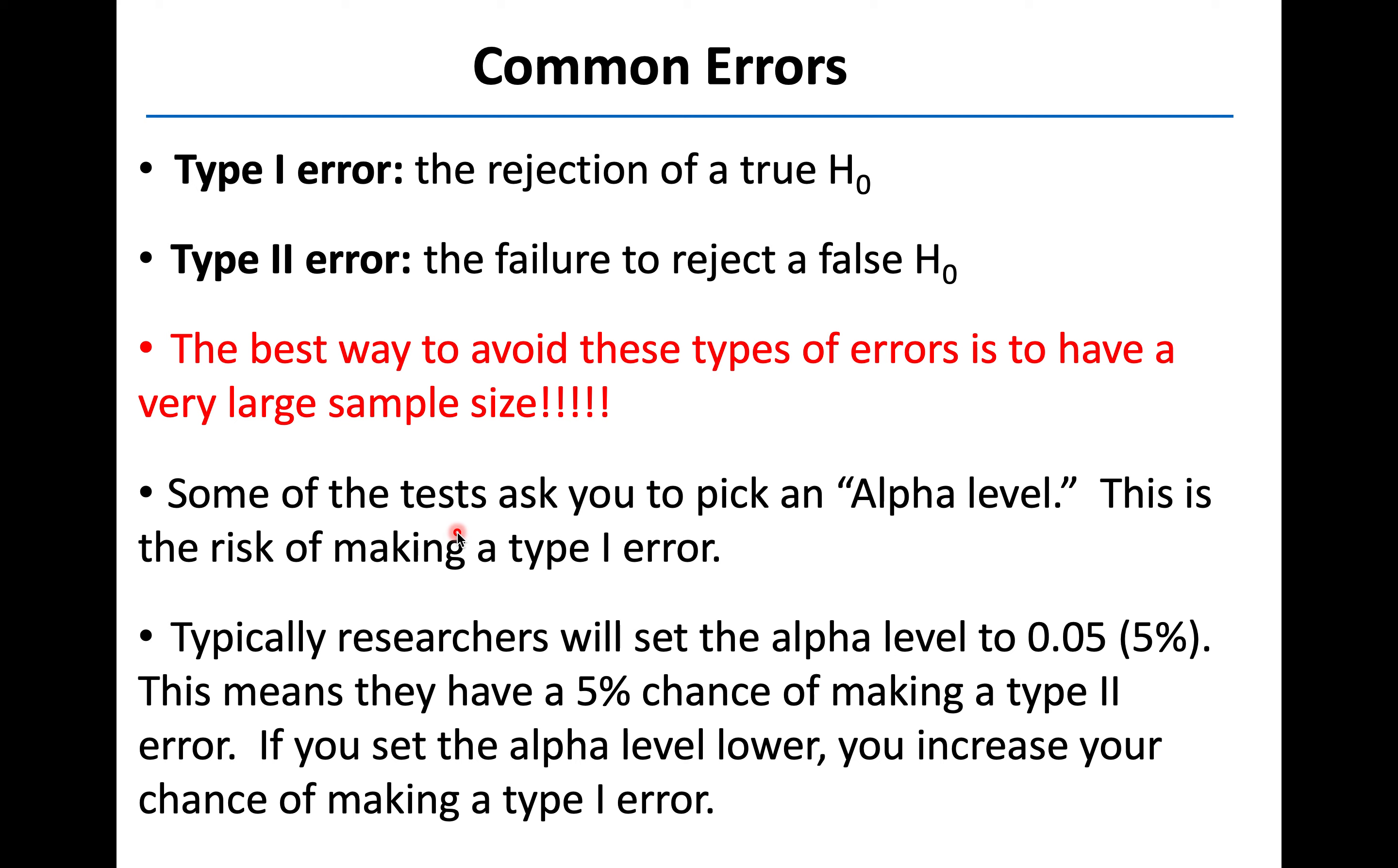You'll see that some of these tests ask you to pick what's called the alpha level, which is basically the risk that you are willing to take for making a type 1 error. And by convention, typically, most researchers, at least in the biological sciences, set the alpha level to 0.05 or 5%, which would mean that there's basically a 5% chance doing the test with this alpha level that you are going to make a type 2 error.